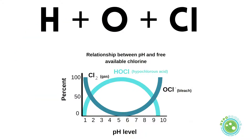Now that we've taken a look at the basics, it's time for a chemistry lesson. Don't worry, this will be quick and painless. Hypochlorous acid is a member of the chlorine family and is made up of hydrogen, oxygen, and chlorine molecules. Free available chlorine exists in three forms: as chlorine gas around pH 0 to 3, as hypochlorous acid around pH 4 to 7, and as hypochlorite around pH 8 to 14.